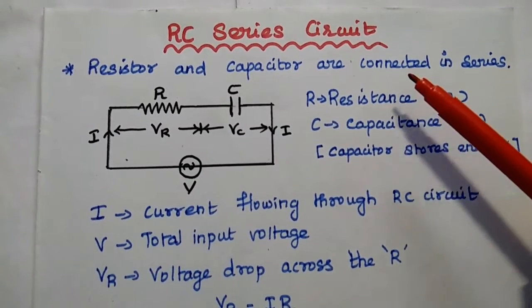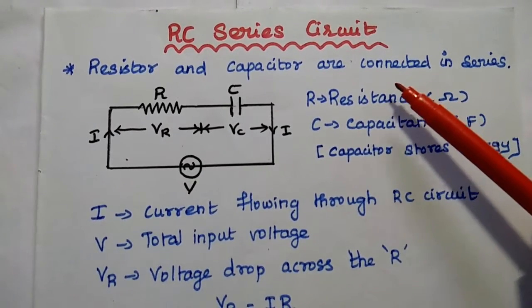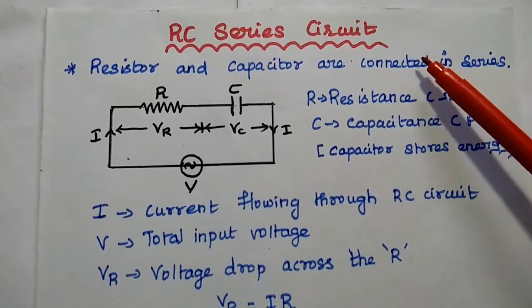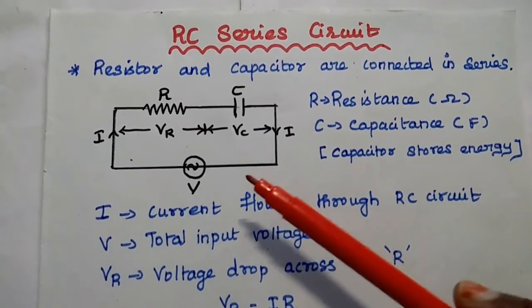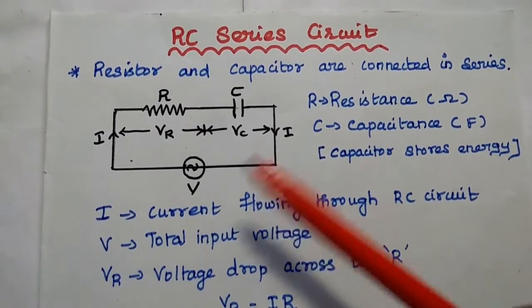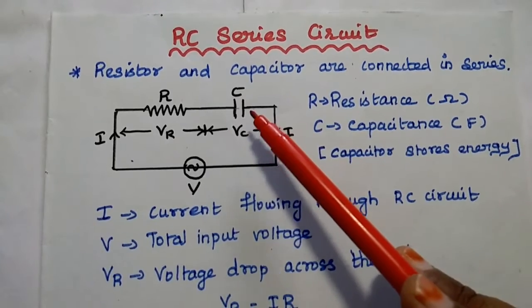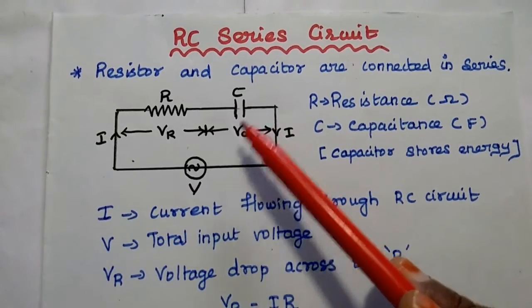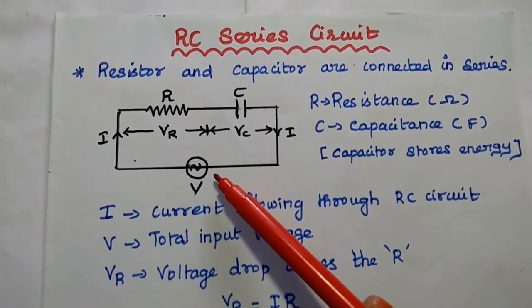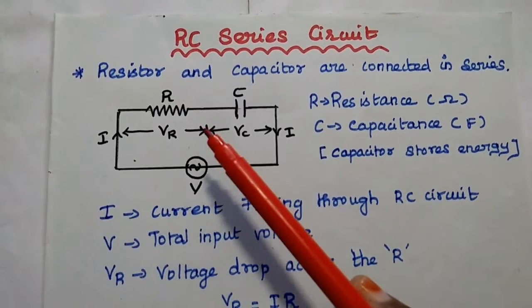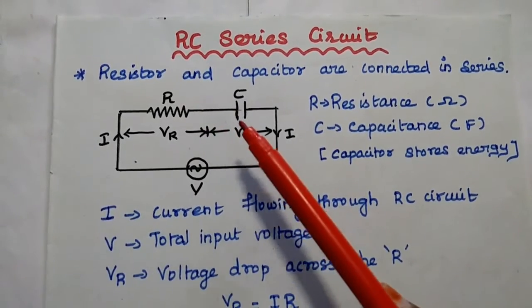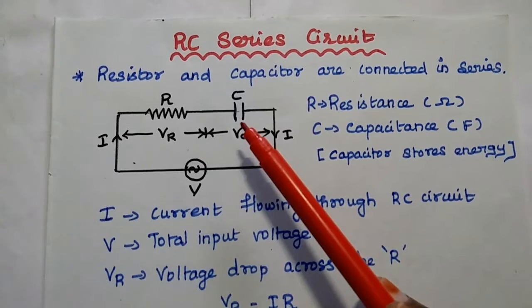Dear students, now we are going to discuss RC series circuit in detail. It is an electric circuit which contains a resistor in series with a capacitor connected across the AC power supply. Simply, we can say resistor and capacitor both are connected in series.